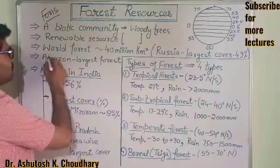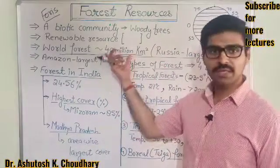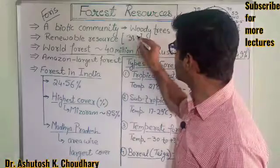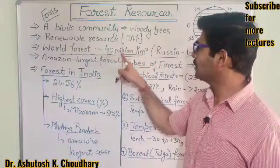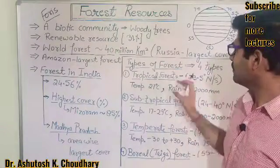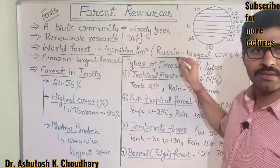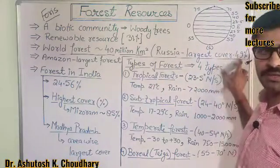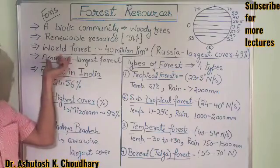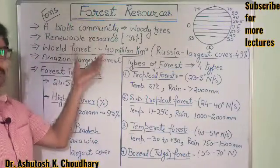The world's forest area is about 40 million square kilometers, which is approximately 31% of the total land area. Remember this: 31% of the total land area, or 40 million square kilometers, is covered by forest resources. The country with the largest forest cover is Russia, at about 49%. The largest known forest on Earth is the Amazon Forest, which is an evergreen tropical rainforest.